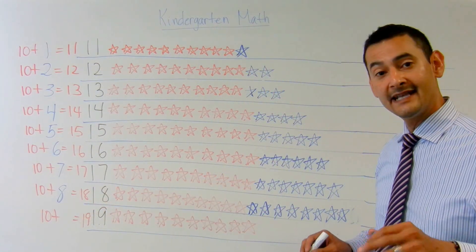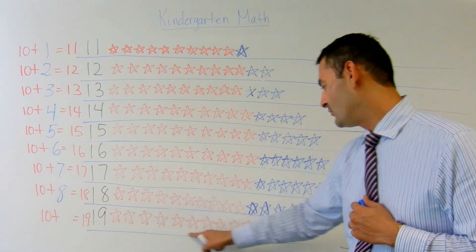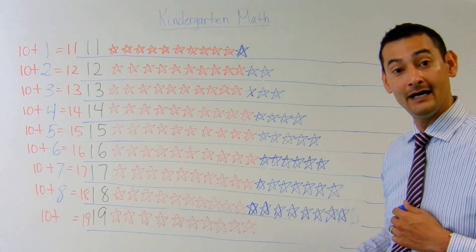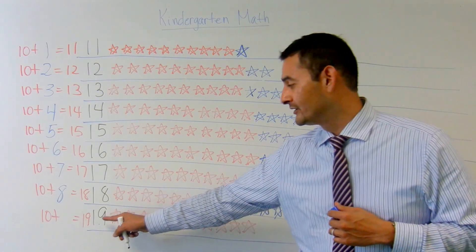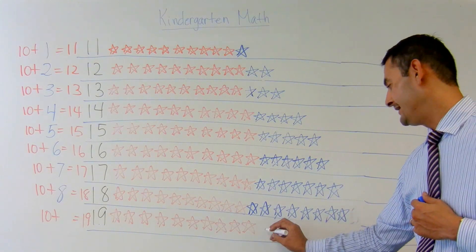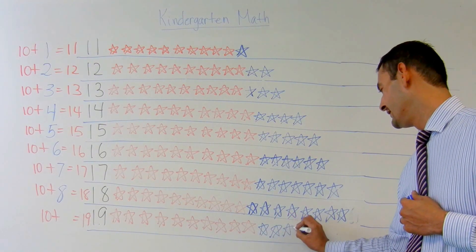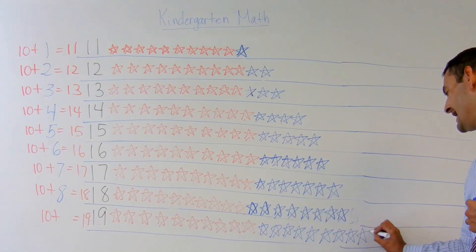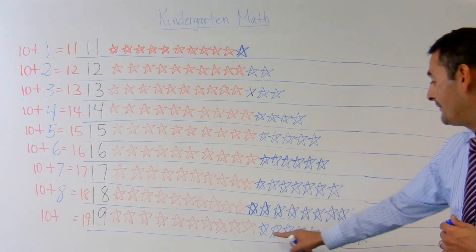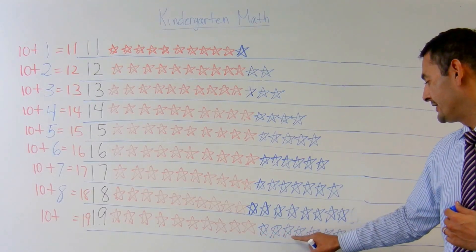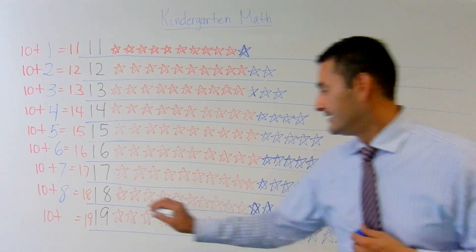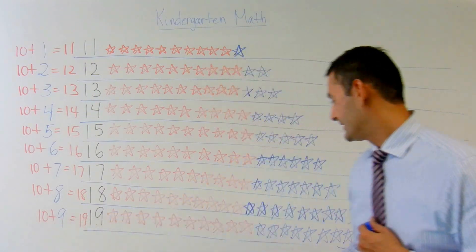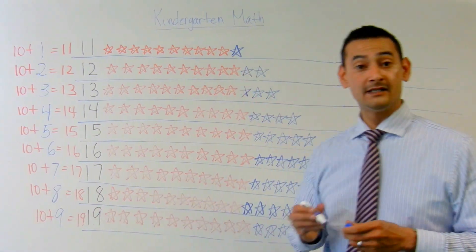Now let's take a look at the last one: 19. I've got 10 ones here. Let's count: 1, 2, 3, 4, 5, 6, 7, 8, 9, 10 ones plus how many more ones is going to equal 19. Let's see: 10, 11, 12, 13, 14, 15, 16, 17, 18, 19. So how many ones do I have here? 1, 2, 3, 4, 5, 6, 7, 8, 9. I've got 9 ones. So 10 ones plus 9 ones equals 19.